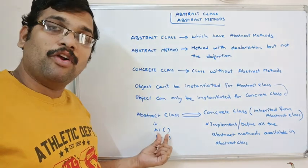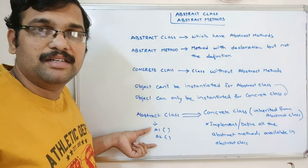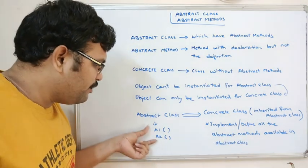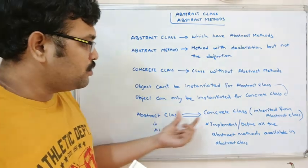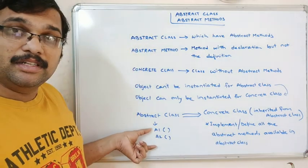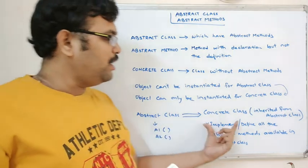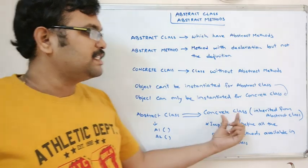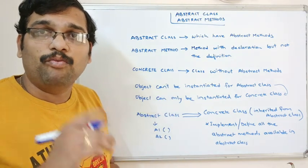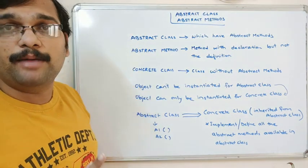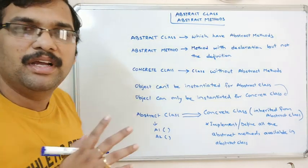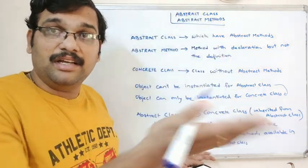In the abstract class we are not writing any definition, so we have to override those methods in the inherited class. If you fail to write the definition for all the abstract methods, that class will also be an abstract class. An abstract class is a class having at least one abstract method, so all abstract methods must be overridden with definitions in the inherited class.